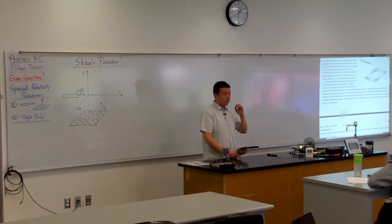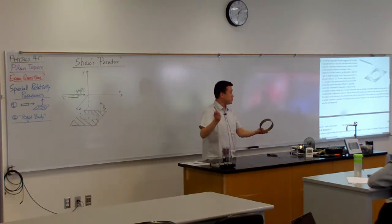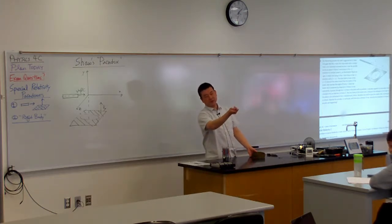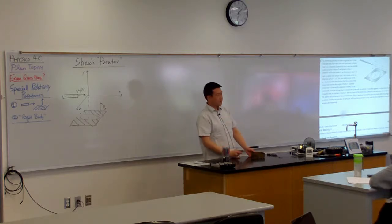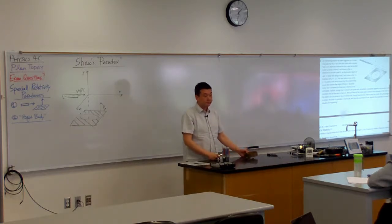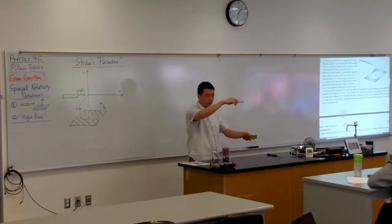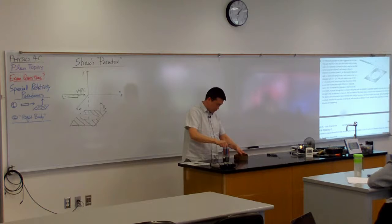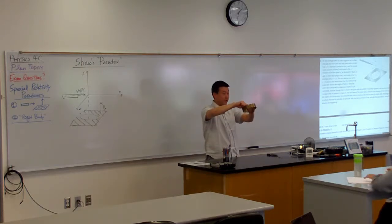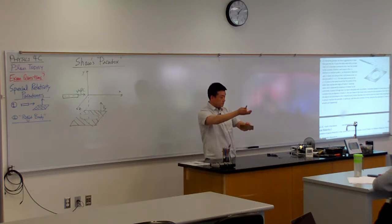All right, so let's just hear the argument. For one of the people who raised your hand on why you think ruler should be able to go through the hole. Ryan, did you raise your hand for that part? Okay, so why do you think the ruler was going to go through the hole? Okay, you think the ruler's Lorentz contracted, so it's shorter. So the ruler is shorter, so now it goes through the hole even more easily. That's what you're saying, right?